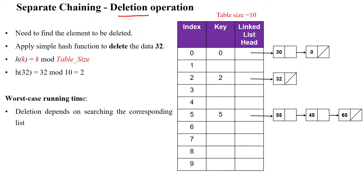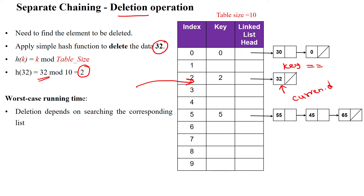For the deletion operation, it is the same process. If I want to delete the value 32, we calculate the hash value — 2 is the hash value. We immediately access index number 2, then map the data value. The given key is 32, matching with the current node dot data. If it is matching and true, data is found, and you can delete the data from this index. This is the way to delete data from chaining.